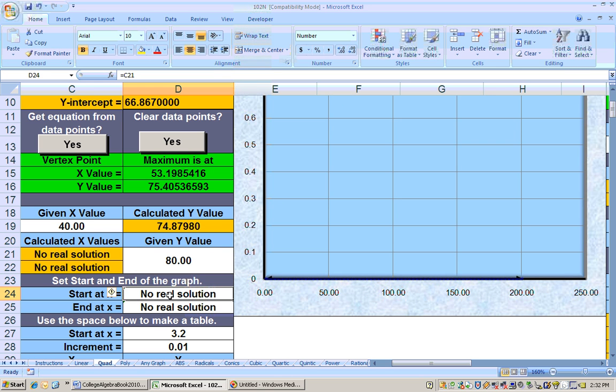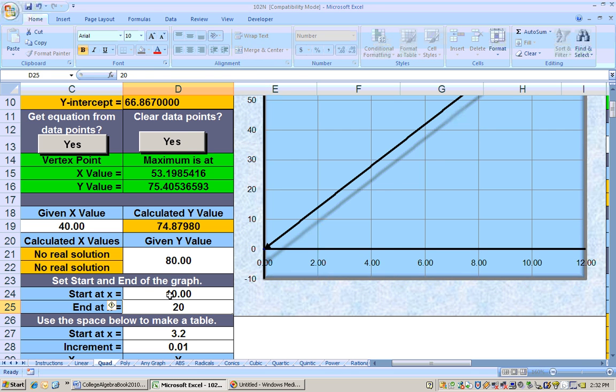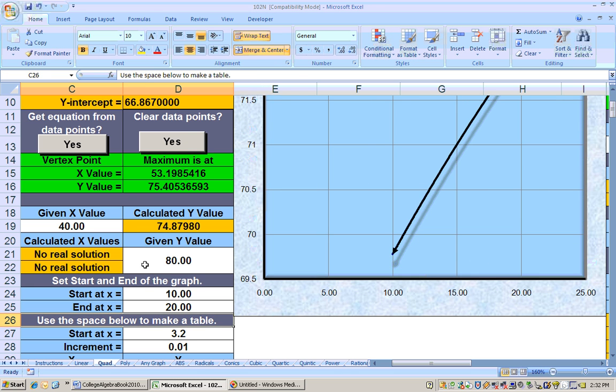The reason it says no real solution, let me put these back to typical values here, but the reason why you get no real solution is because this is higher than the graph goes. It doesn't go any higher than 75. So, if somebody says, when will this happen? You don't type in no real solution. You type in never, because it's never going to reach 80. And that should do it on that problem. Let's go ahead and take a look at the next problem.